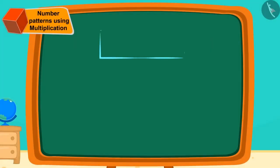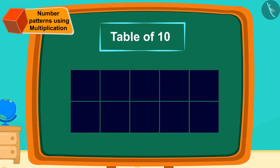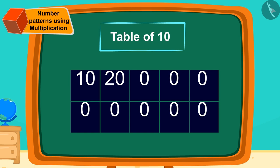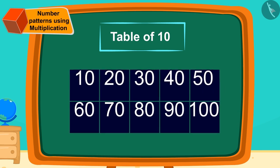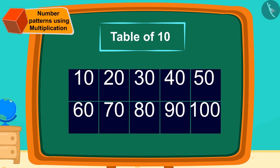Let us now learn the easy process of memorizing the table of ten. First, we will write zero in this way ten times. Now, next to these zeros, we will write the numbers from one to ten like this. What do you see here, children? Yes, our ten table is ready.